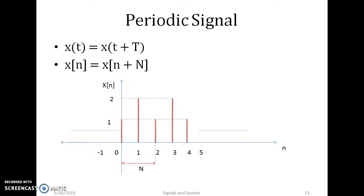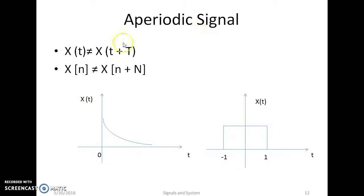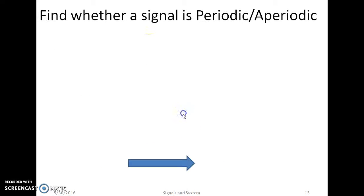Periodic signal. A signal is said to be periodic when x(t) = x(t + T) in continuous domain, and x(n) = x(n + N) in discrete domain. That means the signal repeats itself after a period T or after N samples. An aperiodic signal does not satisfy the condition of periodicity, meaning x(t) ≠ x(t + T) — it is present only for some duration but does not repeat itself.